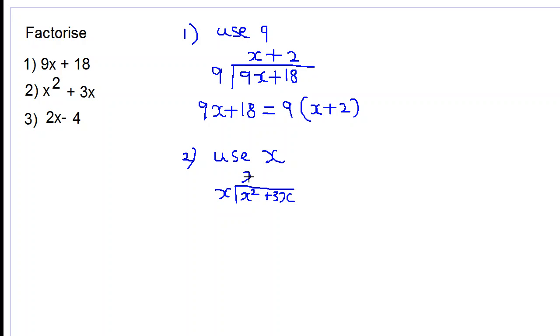x into x squared is x, and x into 3x is 3. Therefore, x squared plus 3x when factorized will give us x multiplied by x plus 3.